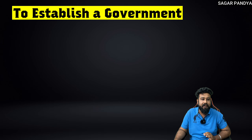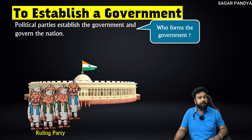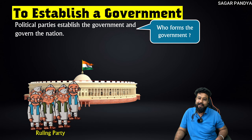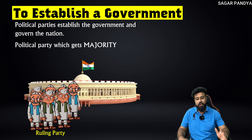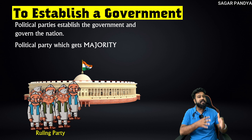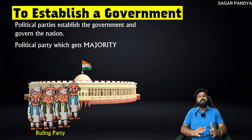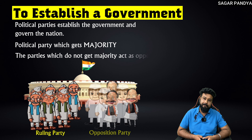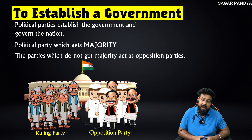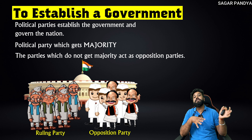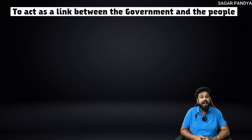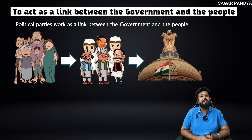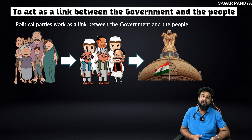The fourth characteristic is to establish a government. The political party establishes the government and governs the nation. The party that gets the most seats — majority — gets the power. These parties which do not get majority become the opposition party. The fifth and last characteristic is to act as a link between government and the people. Political parties work as a link between government and people.